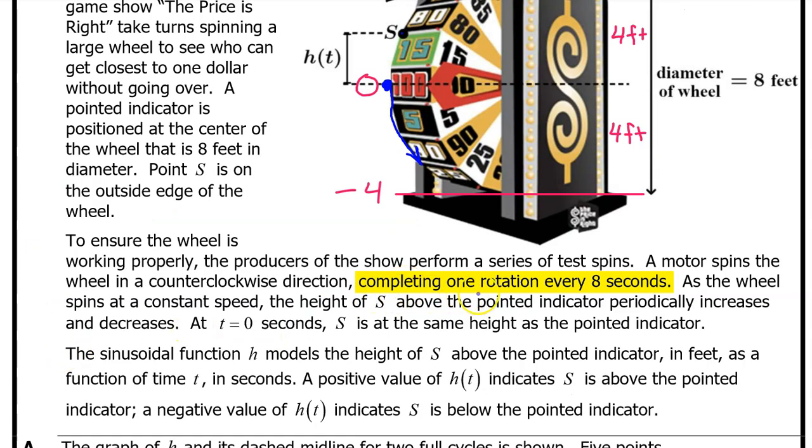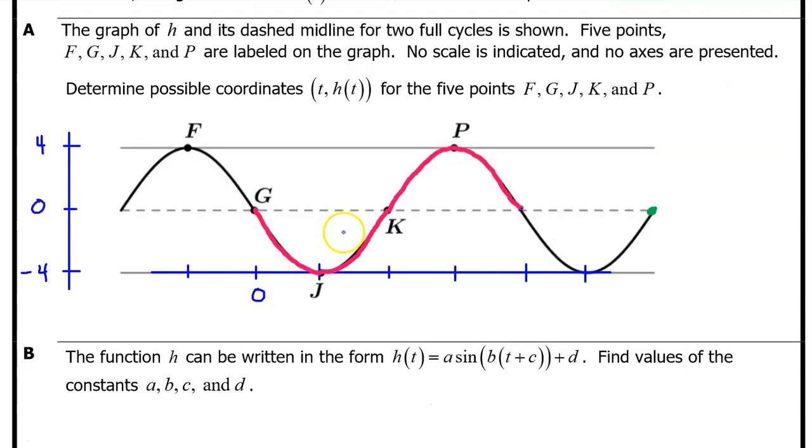The wheel completes one rotation every eight seconds. In other words, the period is eight seconds. The duration of one full cycle is eight seconds. Since the beginning of this period is at T equals zero, then the end must be at T equals eight. The halfway point must be T equals four. Half of that must be at T equals two. And then we're counting by twos. So this is two, four, six, eight. Going to the left a quarter of a period, we have the input value of negative two. Now that we have all of the input coordinates and the output coordinates, we're ready to list the coordinates of the five points.